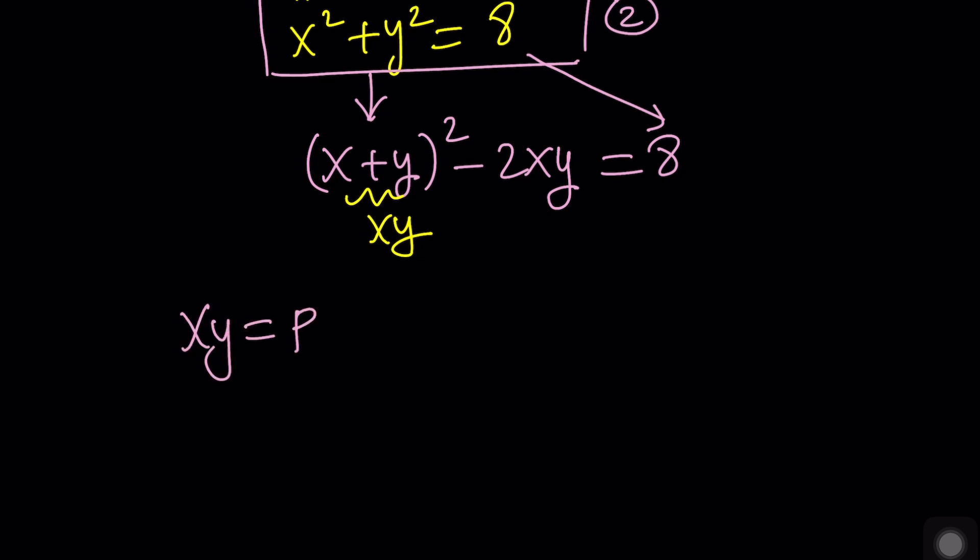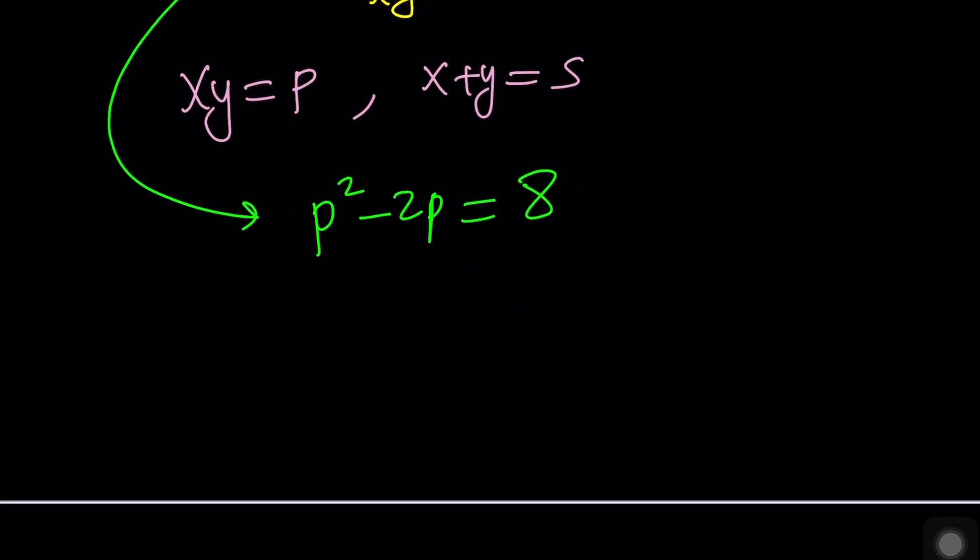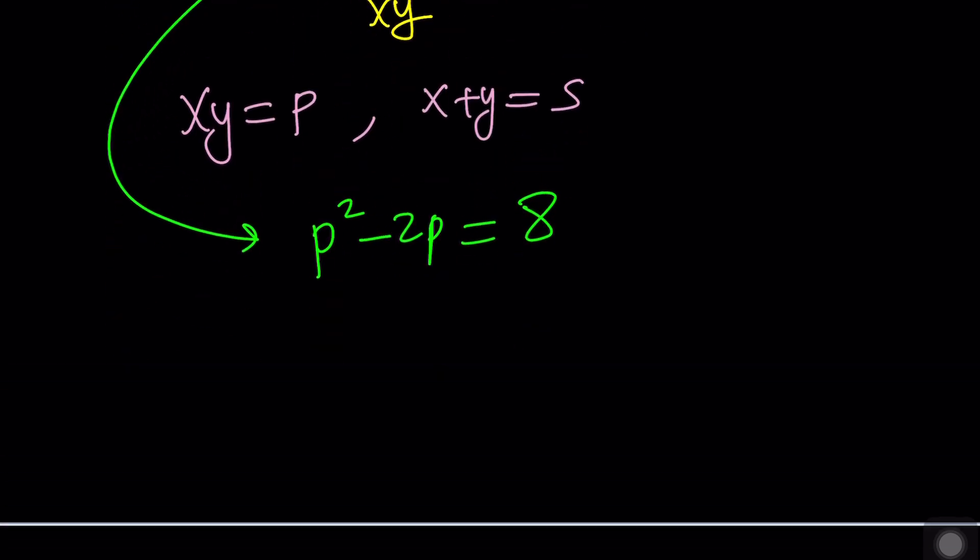So, from here, we get P squared minus 2P equals 8. So, how do you solve this? P squared minus 2P minus 8 equals 0.